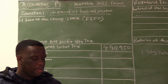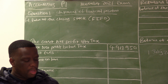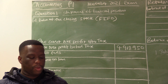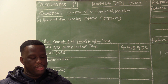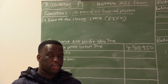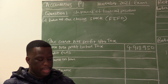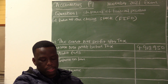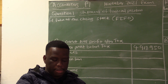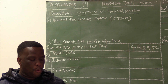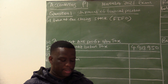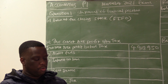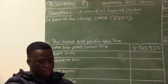Question 1.1: Refer to the information to calculate the value of the closing stock of formal suits that was omitted from the stock sheet on 30 June 2021. The trading stock balance in Information A is R4,198,500, but the omitted stock needs to be calculated using Information B.